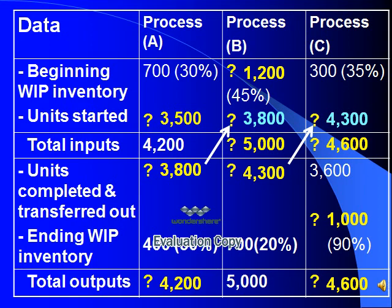In process A, total inputs are 4,200 units. Beginning inventory is 700 units, so units started equal 4,200 minus 700 equals 3,500 units. Total inputs equal total outputs, so total inputs equal 4,200 units. Minus the ending inventory of 400 units, units completed and transferred out equal 3,800 units. That is for process A.